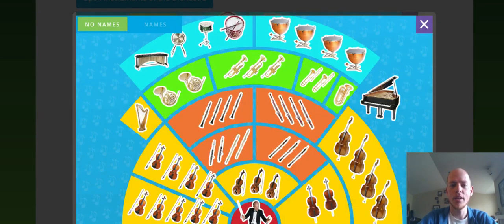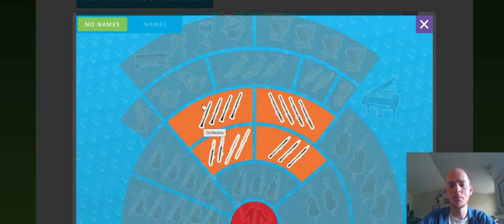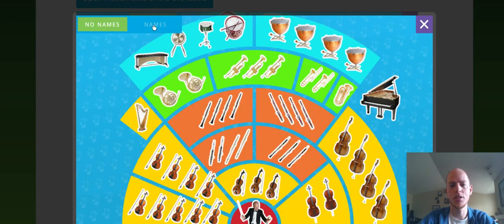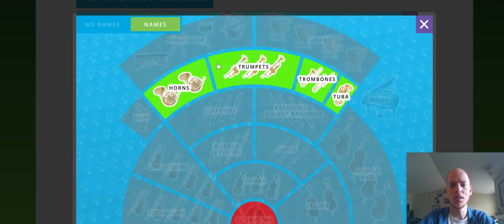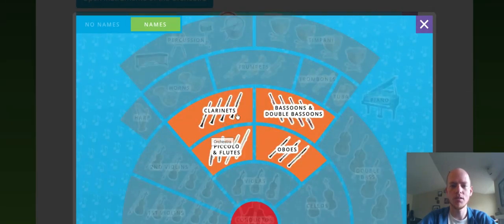Okay, and you can use this to practice naming the families of the orchestra. I'm going to start with names. So we've got percussion, timpani. So I'll click on one and see what they sound like.